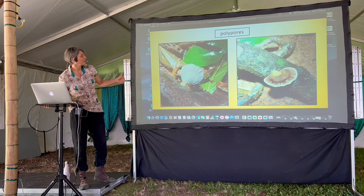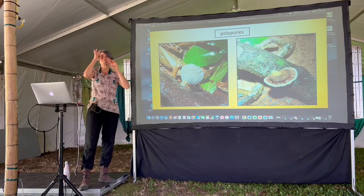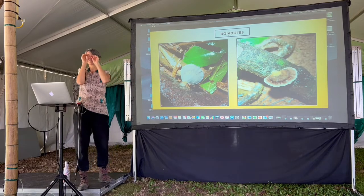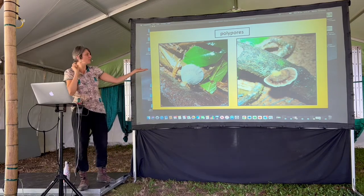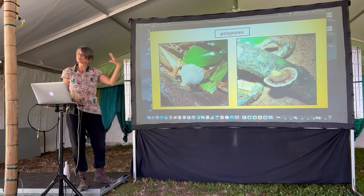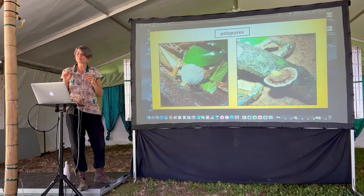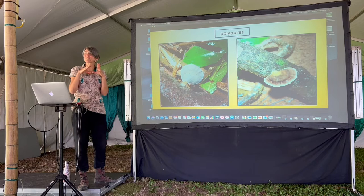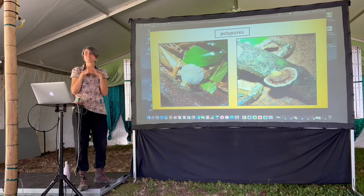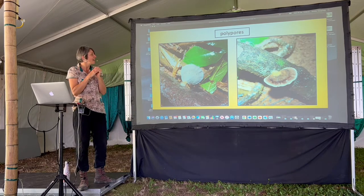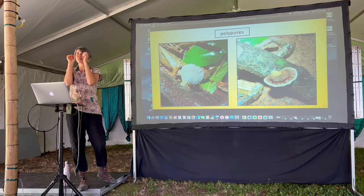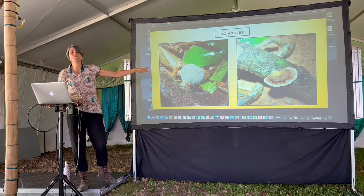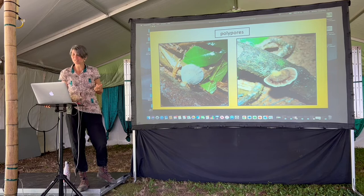Polypores — if you have a magnifying glass, it's a useful thing to bring because you can see the pores. The tiniest little pores look almost smooth, but when you look through a magnifying glass, this whole world of wonder opens up. A lot of the pores and gills have microscopic creatures living on them — flagellates, protozoans, tiny beetles, tiny springtails. The whole universe lives inside the fungal structures.